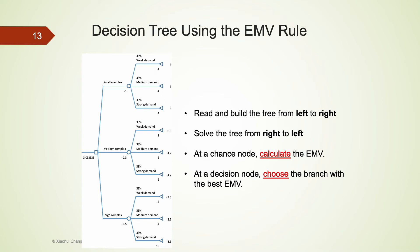Now let's take a look at how to apply the EMV rule when the decision problem is presented using a tree. Instead of moving from left to right when we read and build a tree, we move from right to left when we make a decision. When we encounter a chance node — represented by a circle — we calculate the EMV based on all the states of nature at that node. When we encounter a decision node — represented by a square — we choose the branch with the highest EMV.